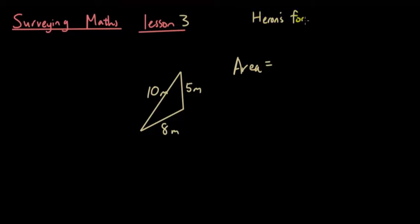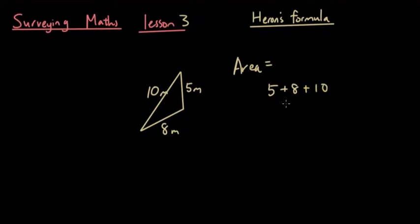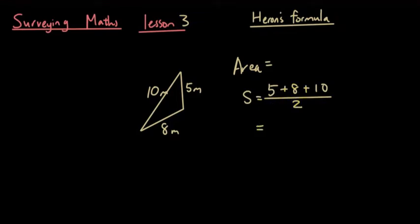Heron's formula looks complicated but it's actually just two simple steps. The first step is to add up all three sides together — so 5 plus 8 plus 10 — and divide the result by 2. Call this quantity s. If you type that into the calculator you get 11.5.